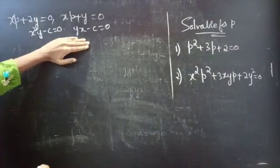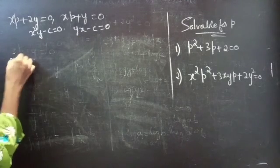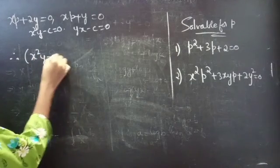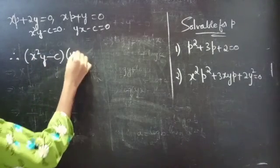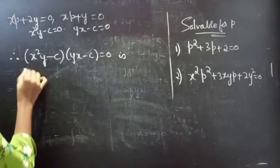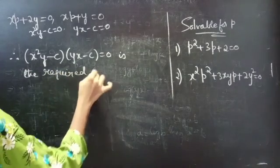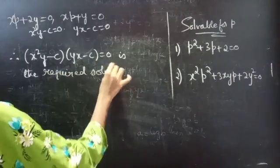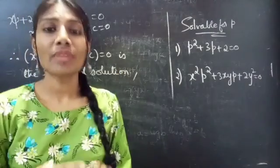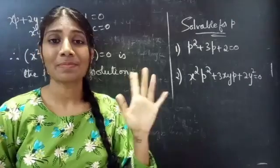The combined form of these two solutions will be the required solution: (x squared y minus c)(yx minus c) equals to 0 is the required solution. So we have solved two problems in this video. Hope you understand — we'll see you in the next video. Bye bye.